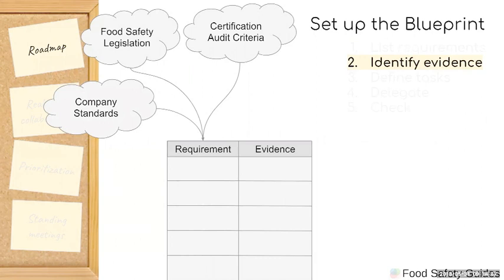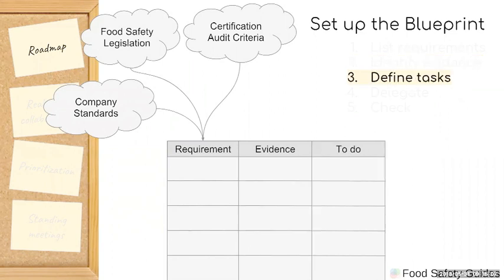Next is to identify your evidence. I normally have a few different columns for this — it could be a column for policies, for procedures, for forms, and other kinds of documentation you might use to demonstrate conformance or compliance with code and criteria. The next column would be your to-do list, so for each and every requirement we have a plan of attack. It's very difficult to juggle 200 or 300 different pieces of an audit, so putting it into a table — a Google Sheet or Microsoft Excel spreadsheet — where you lay out requirements, evidence, and to-dos, is very helpful.